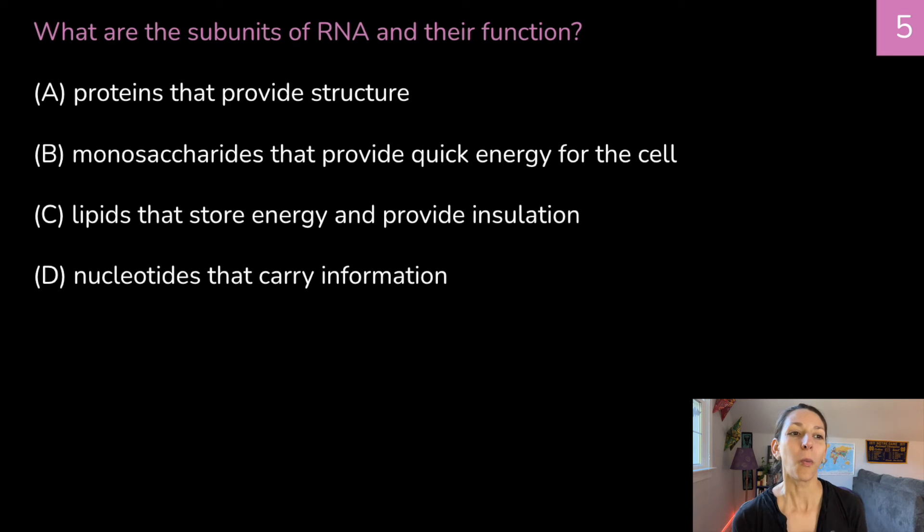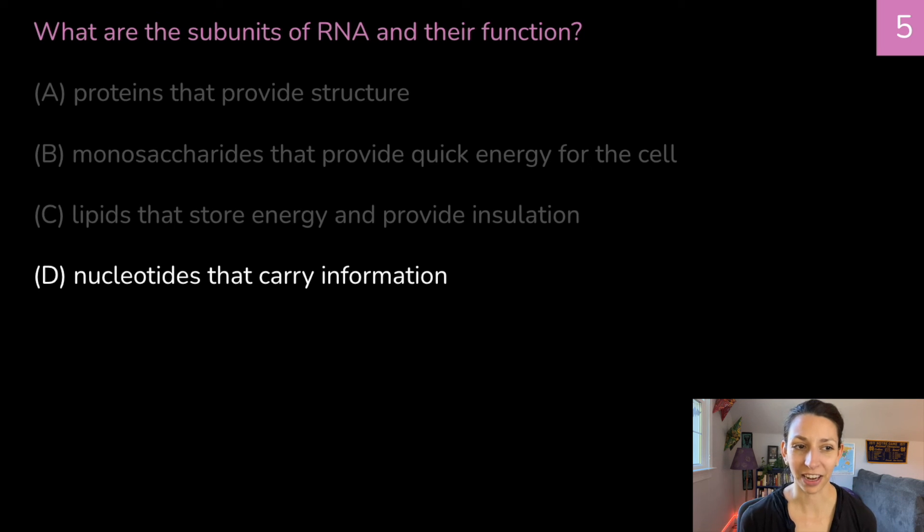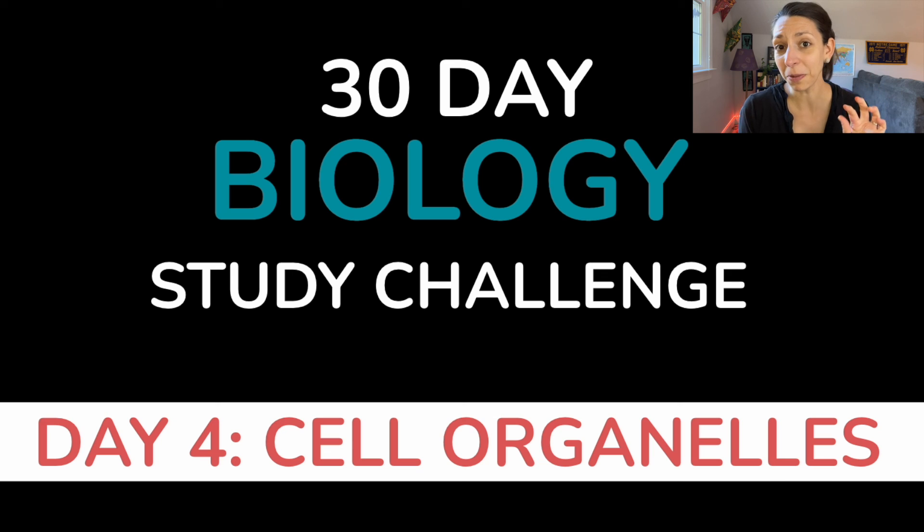And finally, one more for today. What are the subunits of RNA and their function? A proteins that provide structure. B monosaccharides that provide quick energy for the cell. C lipids that store energy and provide insulation. Or D nucleotides that carry information. Think about it. The correct answer is D nucleotides that carry information. So RNA can sometimes be the messenger of a DNA transcript. So DNA is what carries our genetic information. And then we have a special type of messenger RNA that can be sent out of the nucleus and delivered to the ribosome where proteins are made. So that's a little bit of preview for tomorrow's video in our 30 day study challenge. We're going to be going over cell organelles. So make sure you subscribe so you don't miss out. Thanks so much for watching. Give this video a like if it's been helpful and I'll see you later.